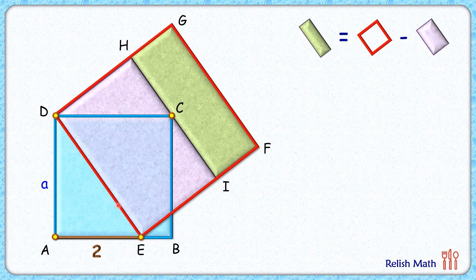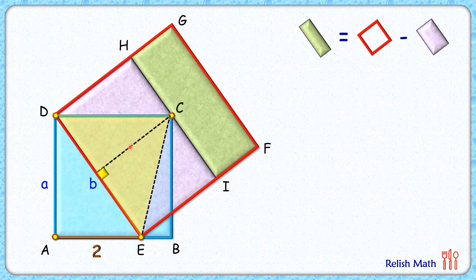For the red square, the side length is 'b' centimeters. Now let's join CE and consider triangle EDC. Taking DE as the base and drawing a height — let's call it x — the area of triangle EDC is half of b times x. Since the height is x, the length HD is also x, so the area of the purple rectangle is b times x. Therefore, the area of the purple rectangle is two times the area of the yellow triangle.